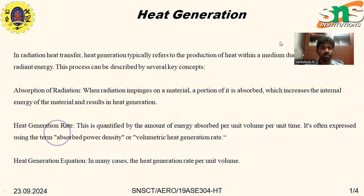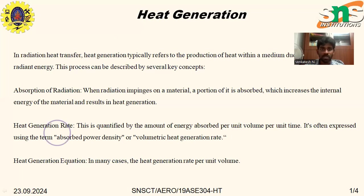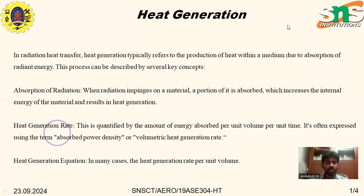This radiation energy process refers to the production of heat within the medium due to absorption of radiation energy in a radiation field. When radiation impinges on a material, a portion of it is absorbed, which increases the internal energy of the material and results in heat generation. This heat generation rate is quantified by the amount of energy absorbed per unit volume per unit time, often expressed as absorbed power density or volumetric heat generation rate.